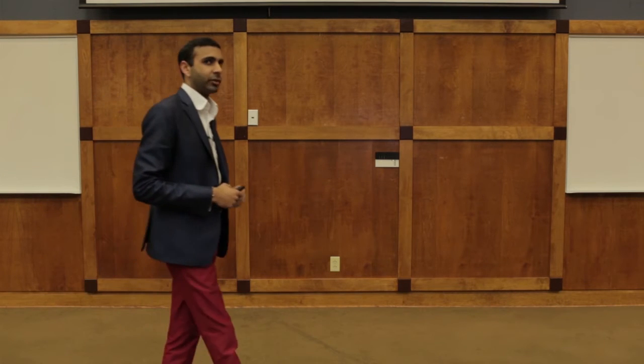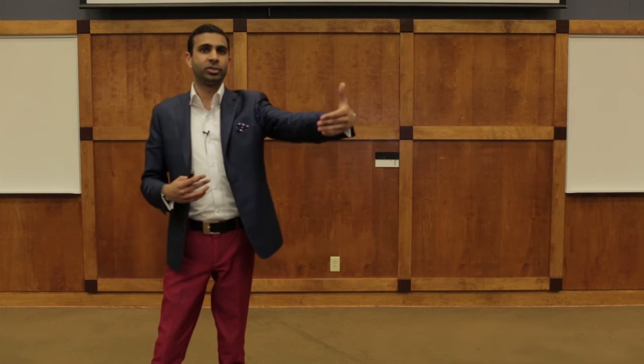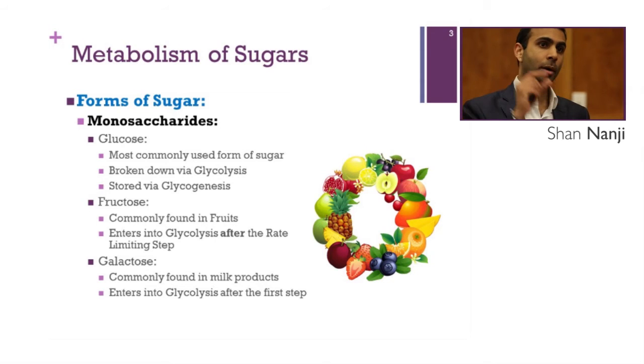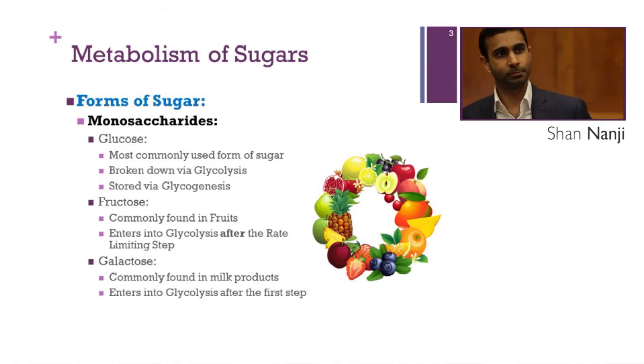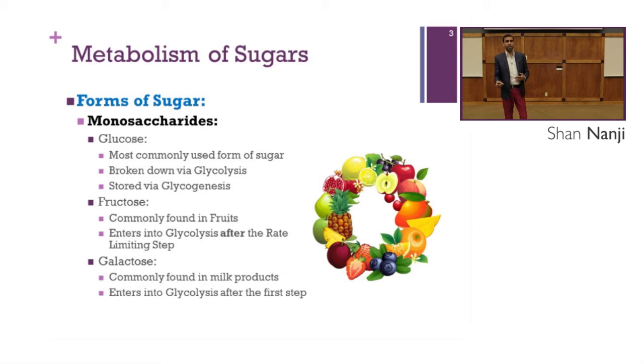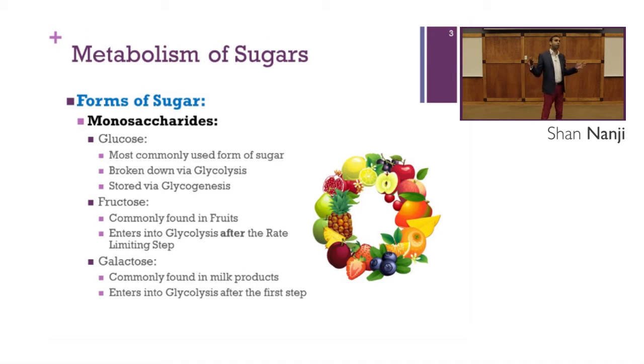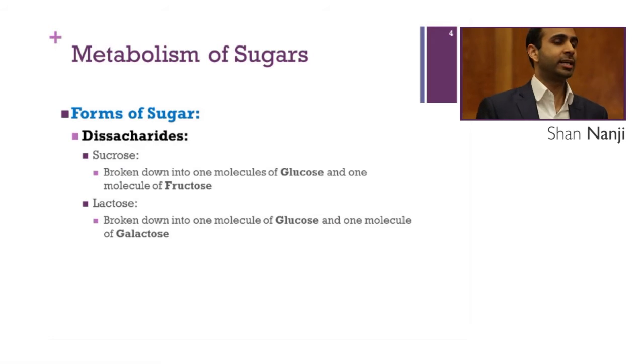Let's discuss forms of sugars, beginning with monosaccharides. Monosaccharides are the easiest sugars for our bodies to break down and are often referred to as simple sugars. Anything that enters glycolysis can eventually turn into fat, which is why foods high in simple sugars — like soda or high fructose corn syrup — can lead to obesity. Glucose is the most commonly used form of sugar; it's broken down via glycolysis and stored via glycogenesis. Fructose is commonly found in fruits and enters glycolysis after the rate-limiting step. Galactose is commonly found in all milk products and enters glycolysis after the first step.